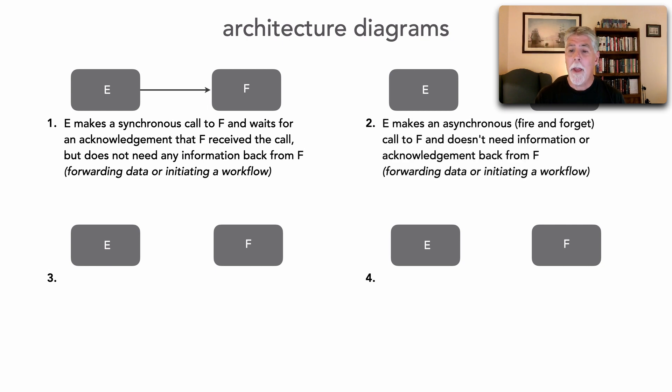Scenario two, E makes an asynchronous, in other words, a fire and forget call to F, usually through a queue or a topic, and doesn't need any information back from F, nor does it need an acknowledgement that F ever received that call.